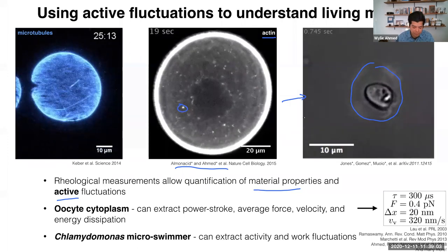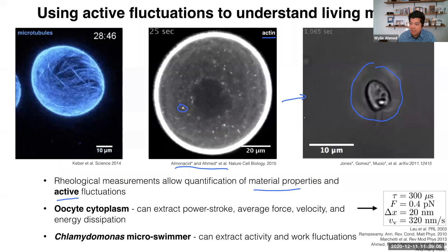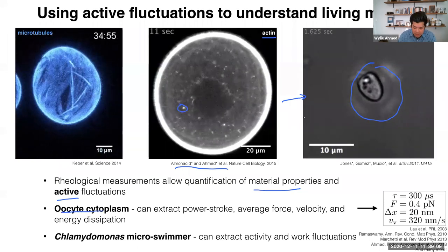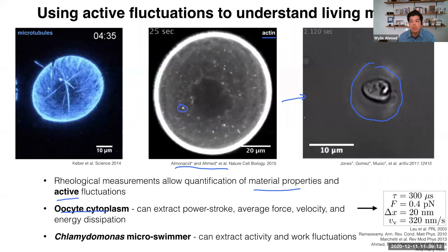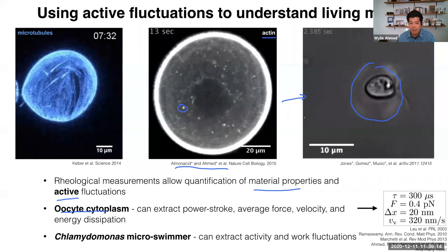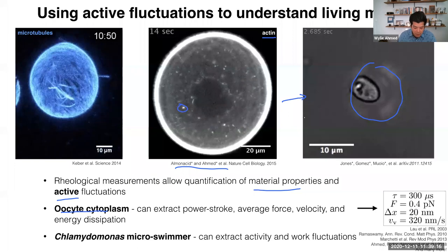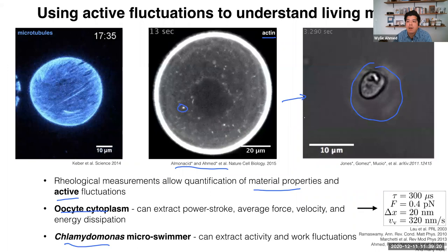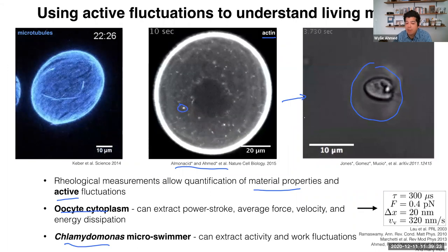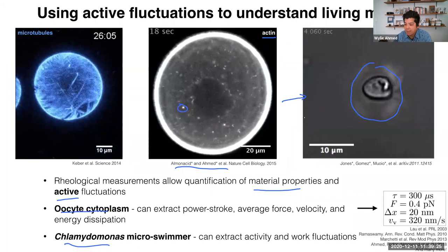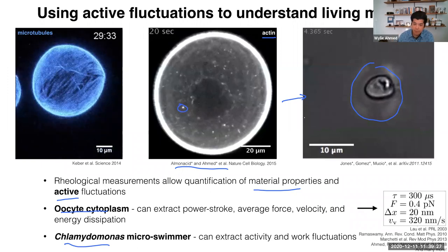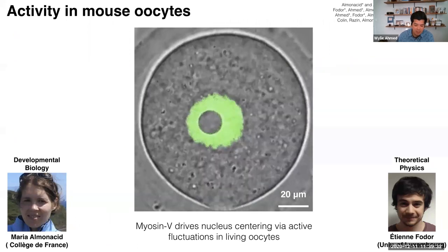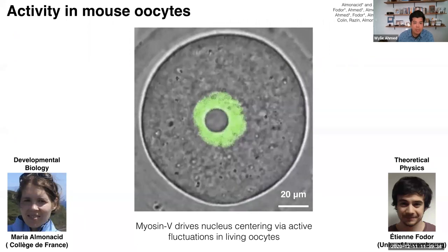At the Chlamydomonas microswimmer level, we quantify the forces and compare this to fluid dynamics work, which has been really fun. In this first part of the story — an ongoing story over the years — we're talking about mouse oocytes and the centering of their nucleus. This nucleus gets driven towards the center, which is important in the developmental cycle. This is a collaboration with Marie-Hélène Verlhac's group and Maria Almonacid, as well as Fred Van Wijnen's group.